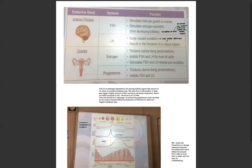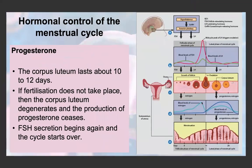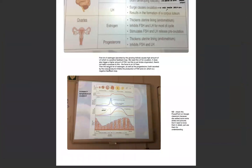Progesterone thickens the uterine endometrium and inhibits FSH and LH — another negative feedback loop. The first lot of estrogen from the growing follicle inhibits FSH to stop another follicle developing, but also causes LH to increase — a positive feedback loop needed for ovulation. The second lot of estrogen, secreted by the corpus luteum along with progesterone, both inhibit FSH and LH production — a negative feedback loop.